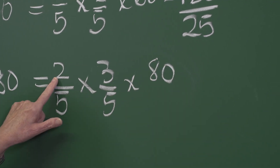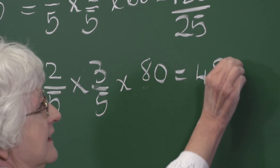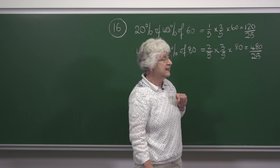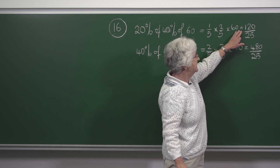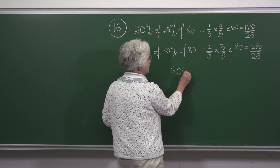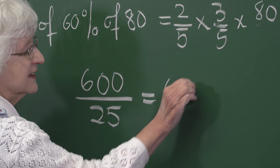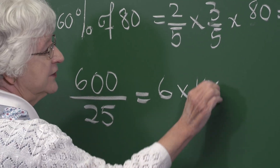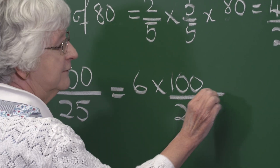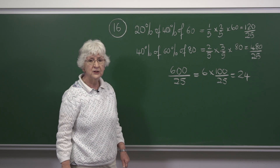Two-fifths of 80 are 6, and six-eighties are 480 over 25. So altogether we have 120 plus 480, which is 600 over 25, which is 6 times 100 over 25, which is 6 times 4, which is 24 — the answer is C.